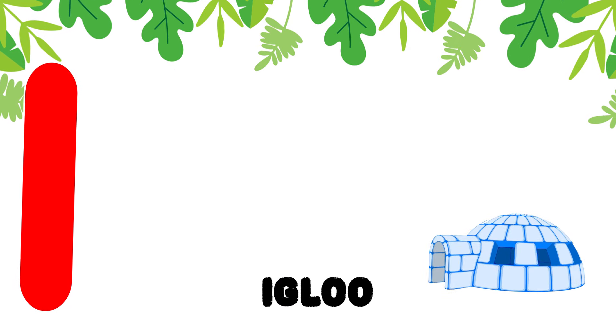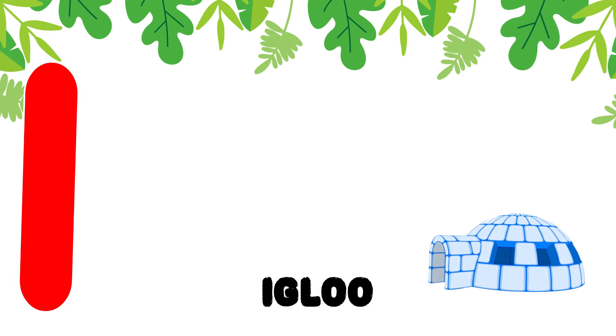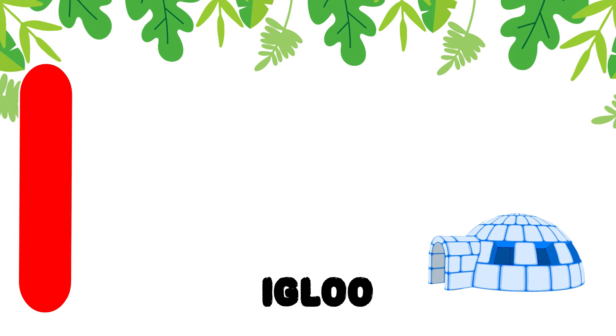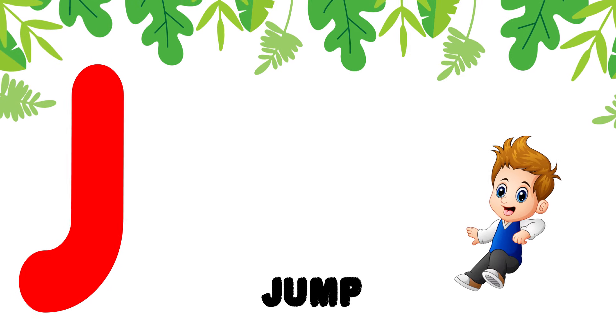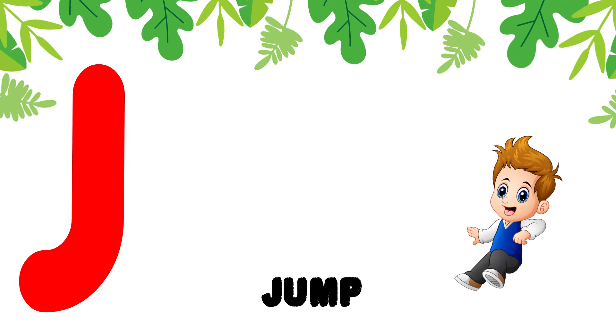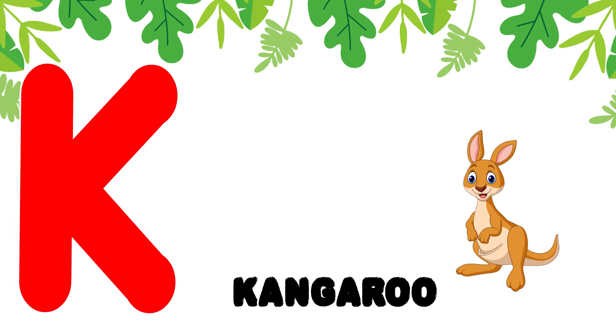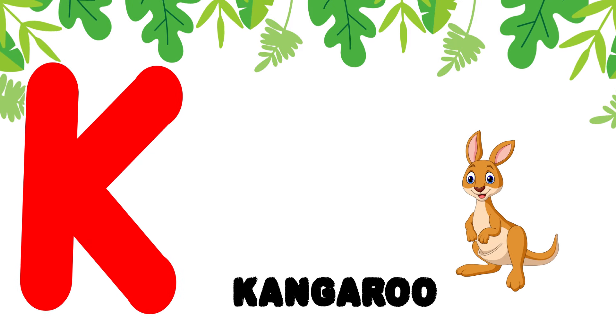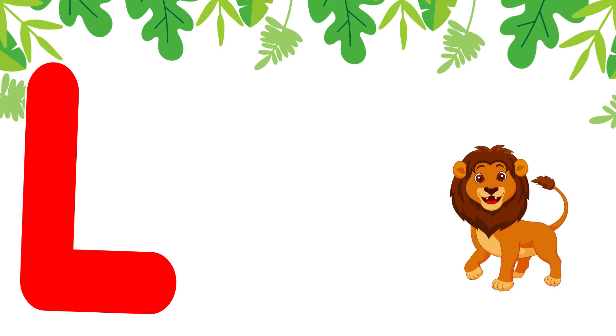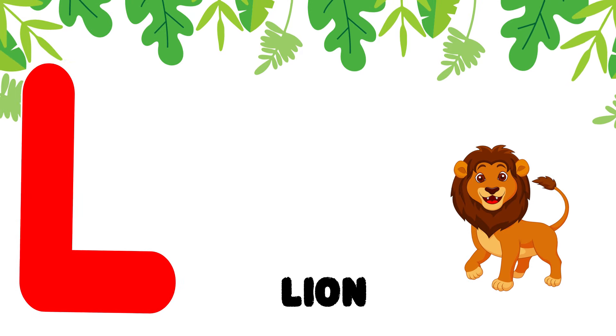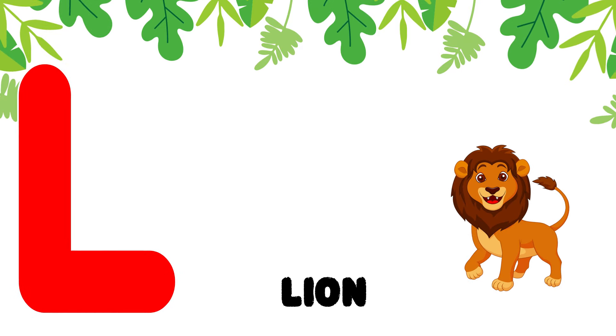I is for igloo. I, igloo. J is for jump. J, jump. K is for kangaroo. K, kangaroo. L is for lion. L, lion.